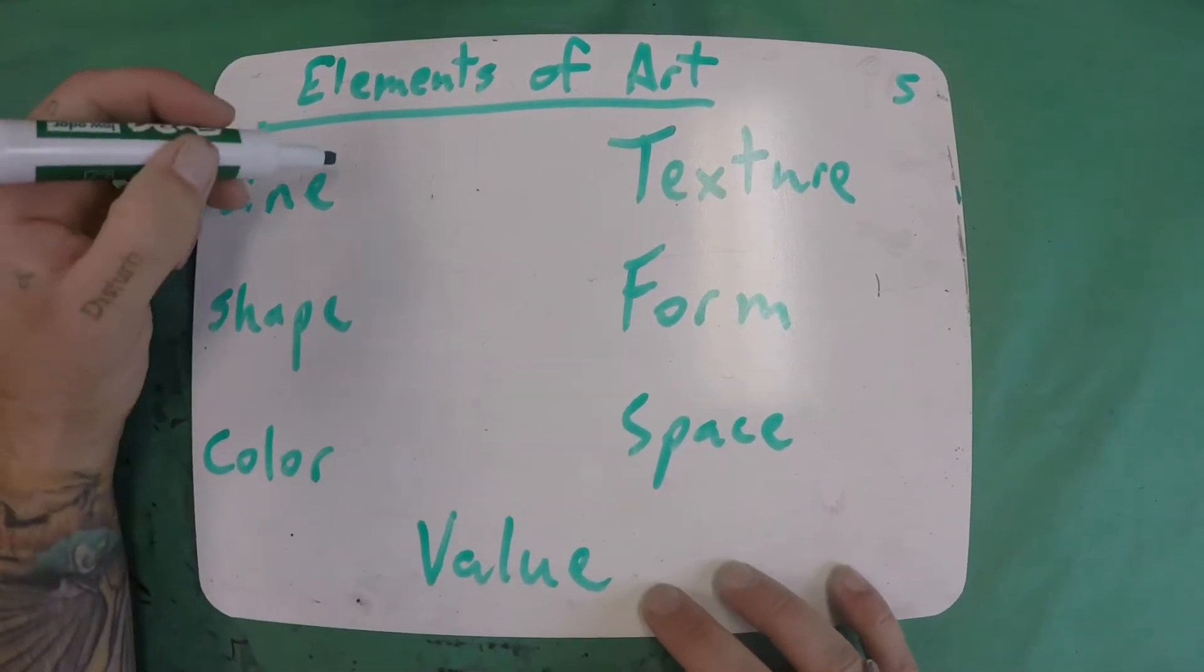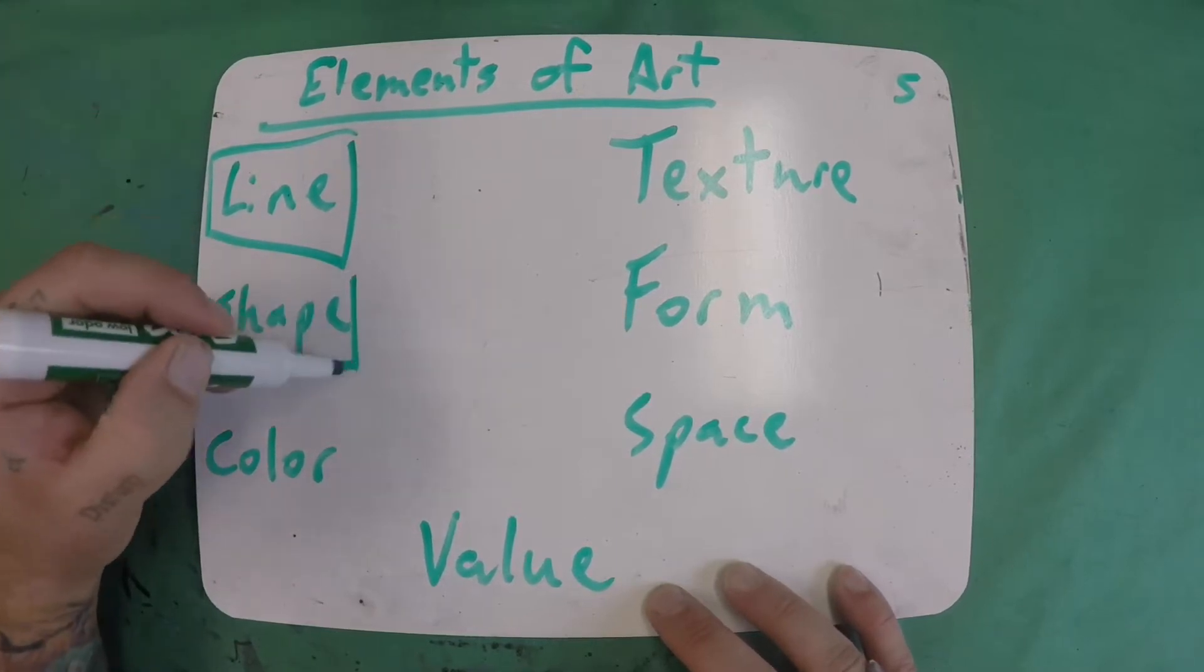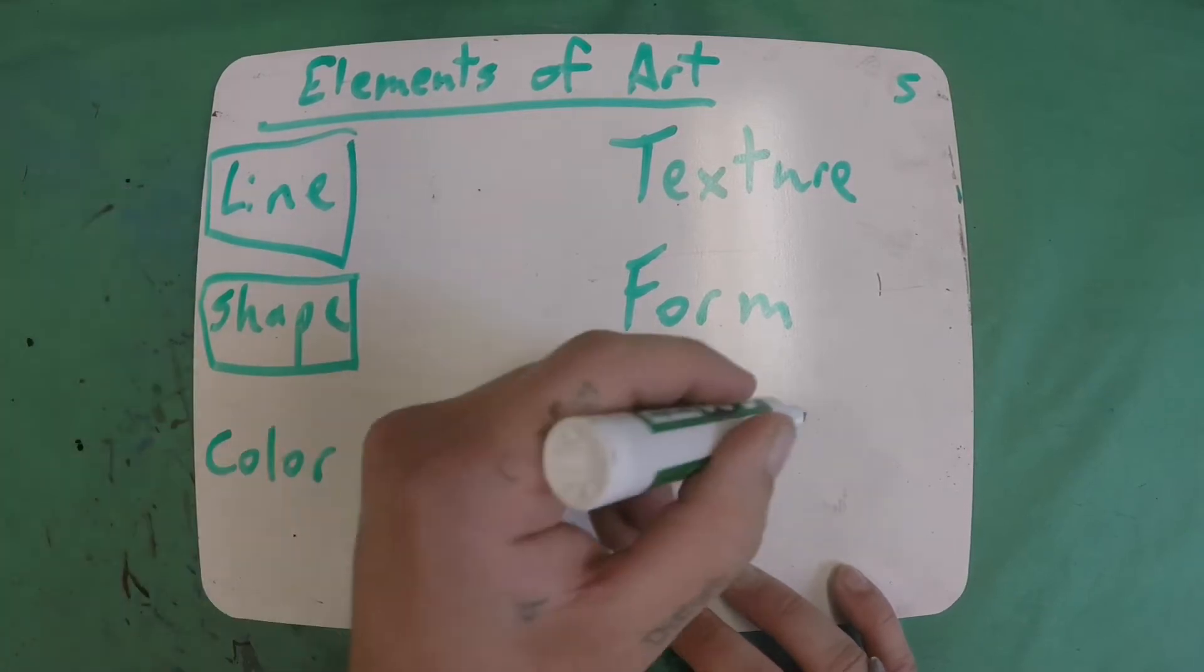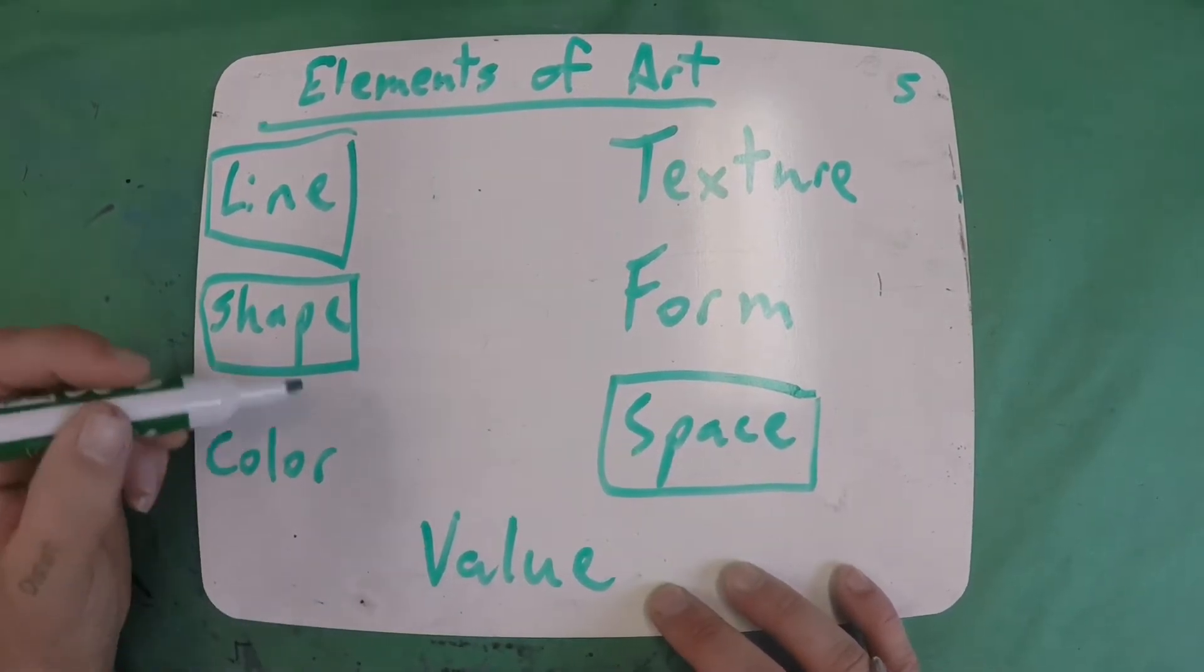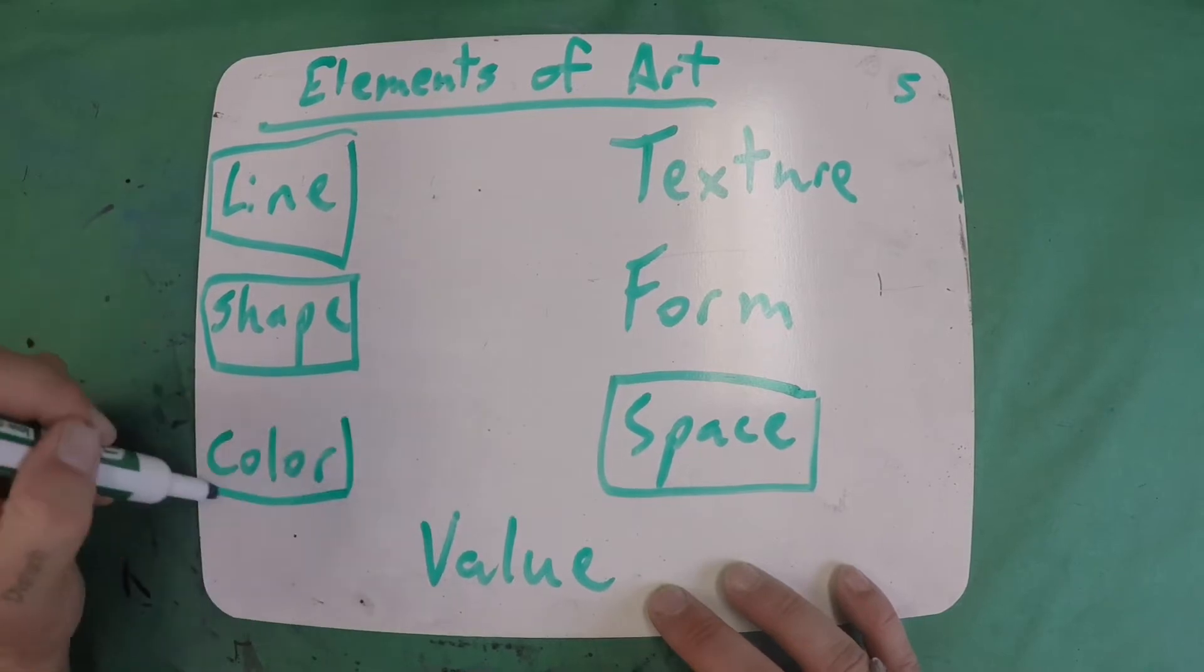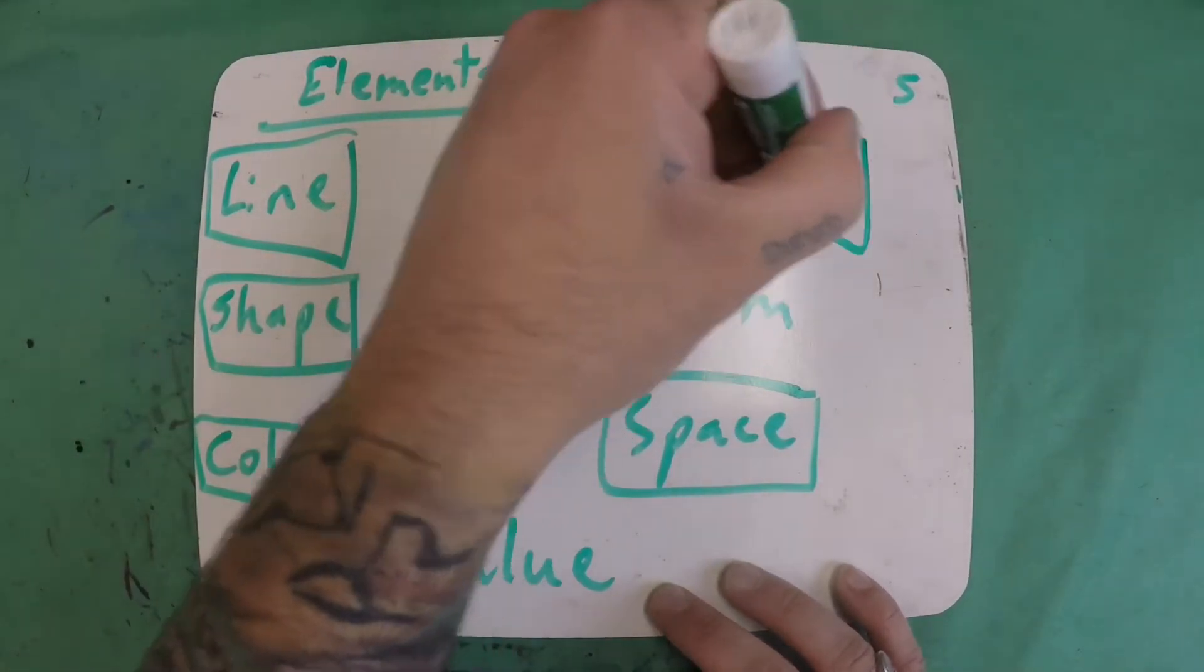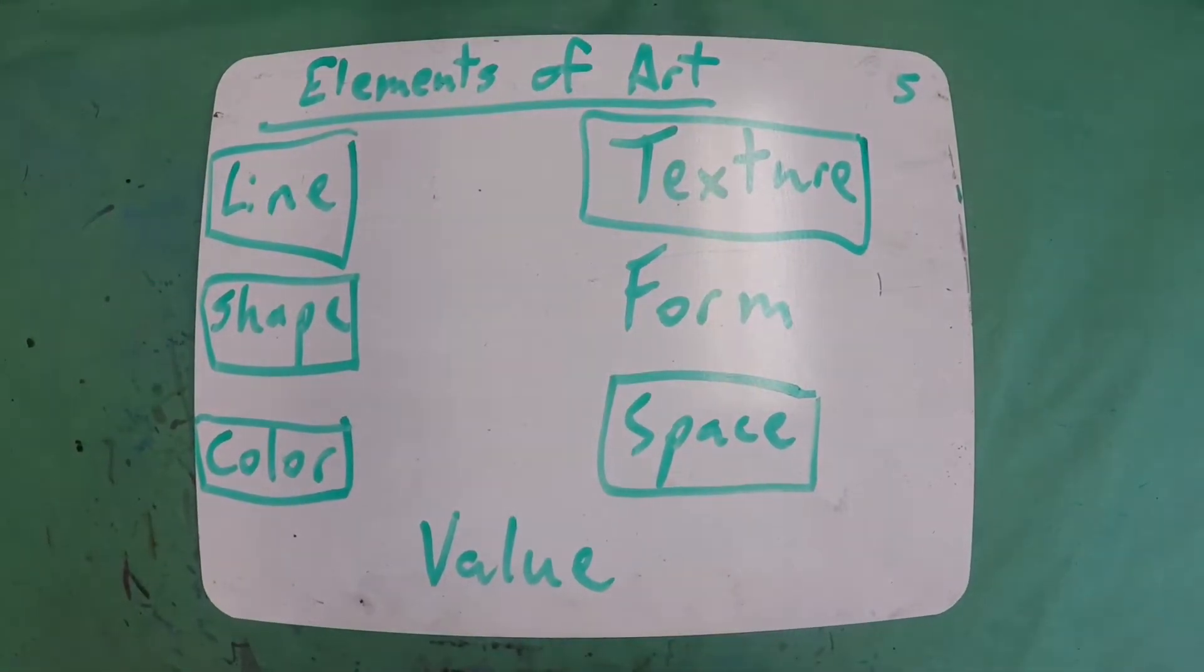So we're going to start off, like we always do, with some lines. We're going to use those lines to create shape. We're going to use a special line, called a horizon line, to help us create some space. We're going to, once we have all those lines laid down and drawn on the paper, we're going to use some color.